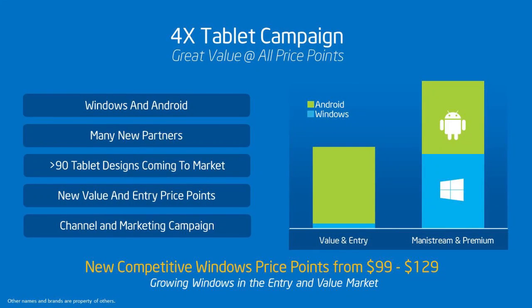Now coming to our four times tablet campaign. When I speak about a tablet campaign, we have colorized for you this chart here. On the left side, you see entry and value skews that we have working with our customers. And on the right side, you see mainstream and premium skews. You can see there is a distribution in the mainstream and premium — Windows and Android. That is what you are very familiar with.